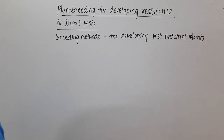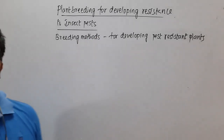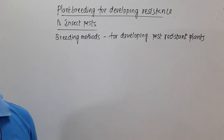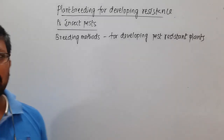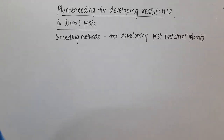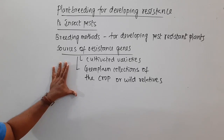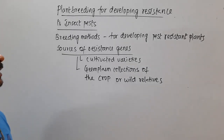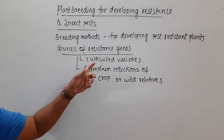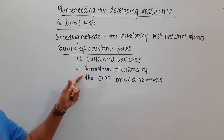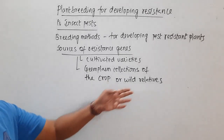When it comes to breeding methods for developing pest resistant plants, the breeding process involves the same steps discussed earlier, like collection of germplasm and the other normal plant breeding steps. The sources of resistant genes can be collected from cultivated varieties, germplasm collections of the crops, or even wild varieties.